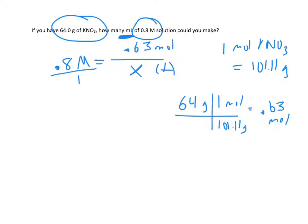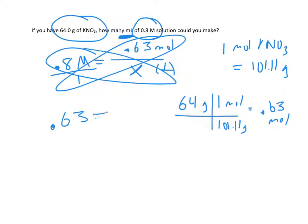And I want to solve for X now. So again, I like to cross, multiply, and divide. So 0.63 times 1 is 0.63. 0.8 times X is 0.8X. And now I want to solve for X. So I'll divide by 0.8 on both sides. So 0.63 divided by 0.8 gives me 0.79 rounded.